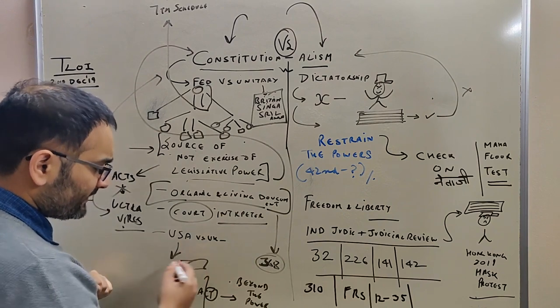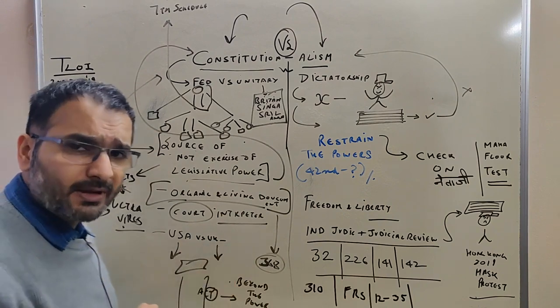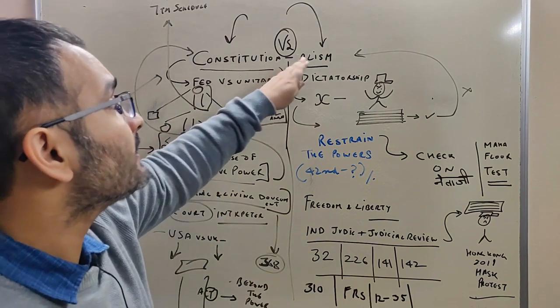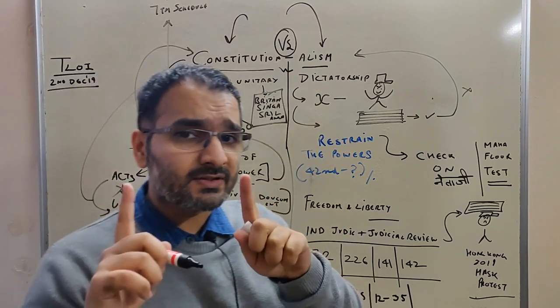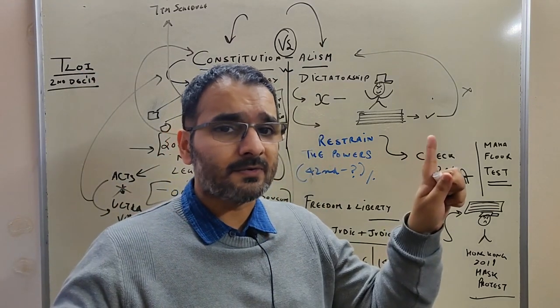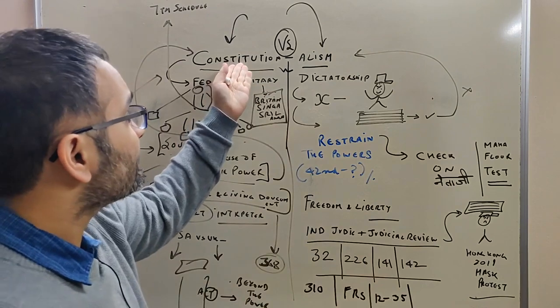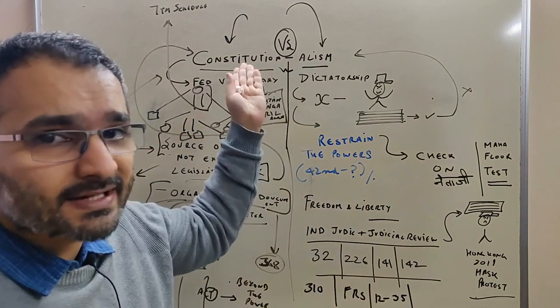USA of course is a written constitution. UK is not, but UK has a lot of common law. Now we come to constitutionalism, which is a far different concept from constitution. Sure enough, it will be derived from this, because 'ism' is attached to it. So etymologically speaking, it comes from here.